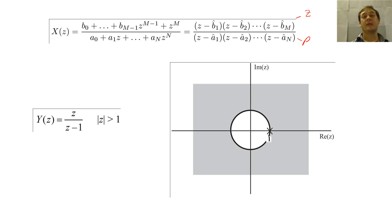For example, if we had this Z-transform, we would have a pole at one and a zero at zero. For this right-sided Z-transform, the pole marks the inner boundary of the ROC.